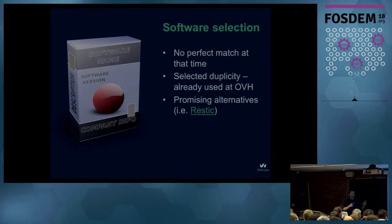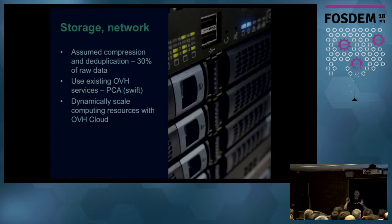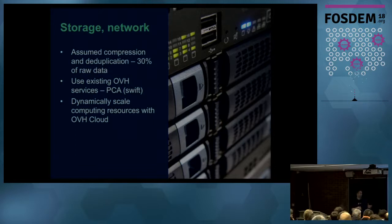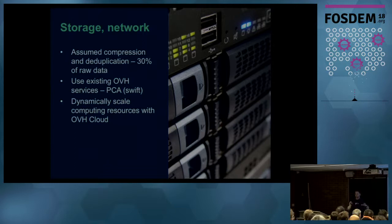We selected the software; now let's think about resources. We assumed roughly 30% of data remains after compression and deduplication. We wanted to reuse as much internal infrastructure as possible, so we used our internal OVH Swift cluster. We also needed compute power for compression and deduplication, so we decided to use OVH cloud VMs — very flexible, easy to spawn or destroy, with dedicated teams to handle resource problems.